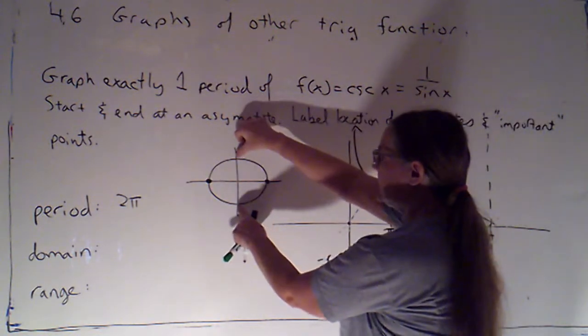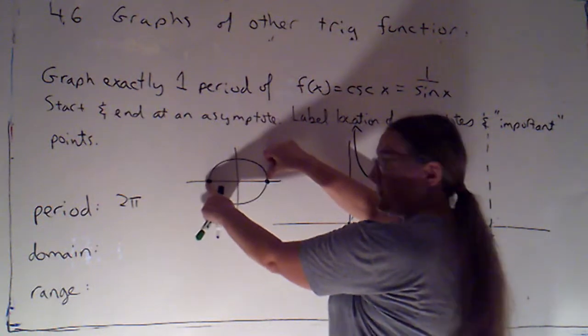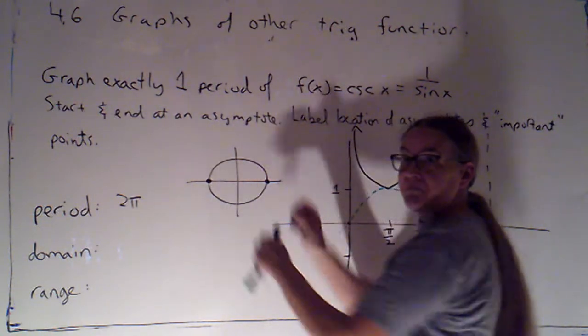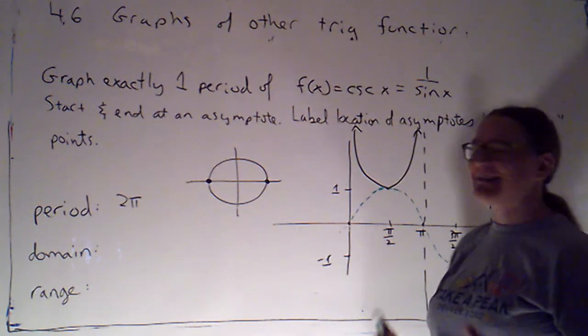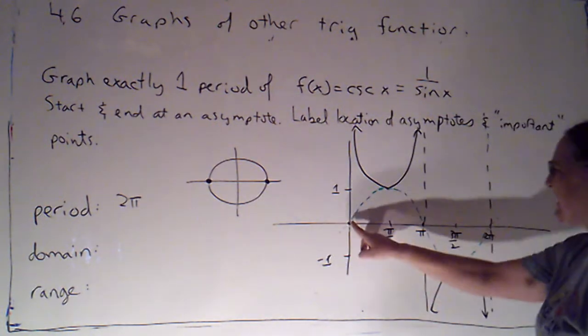Now these points were odd multiples of pi over 2. These are the even multiples of pi over 2. But an even multiple of pi over 2 is the same as just a multiple of pi. And I can sort of see that.